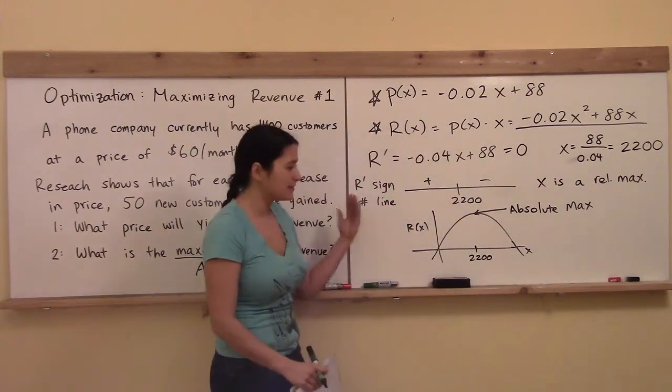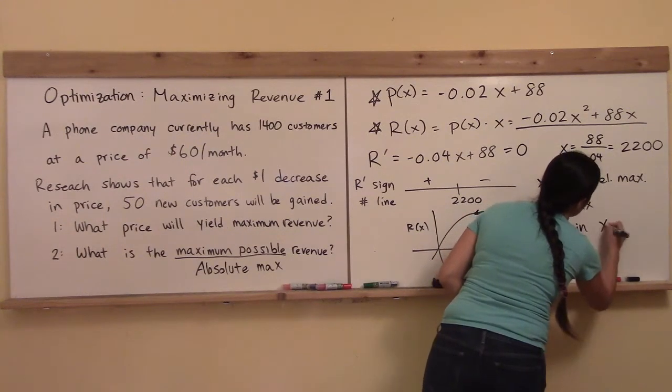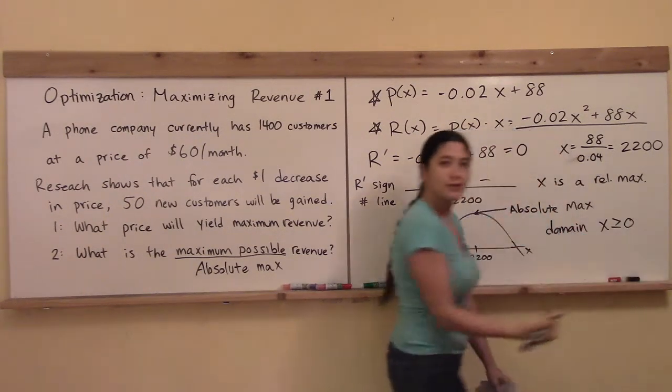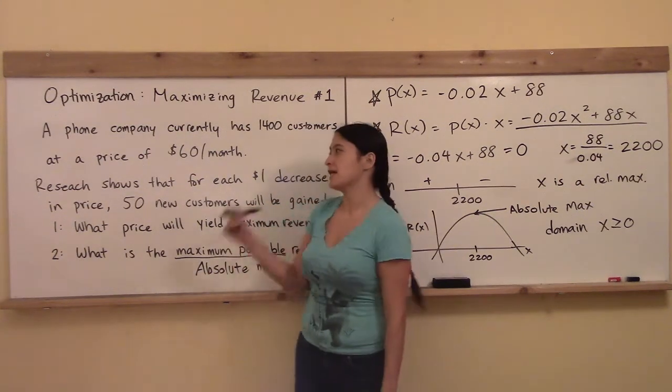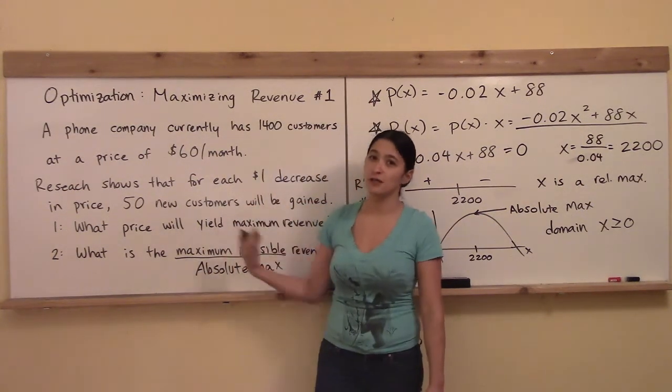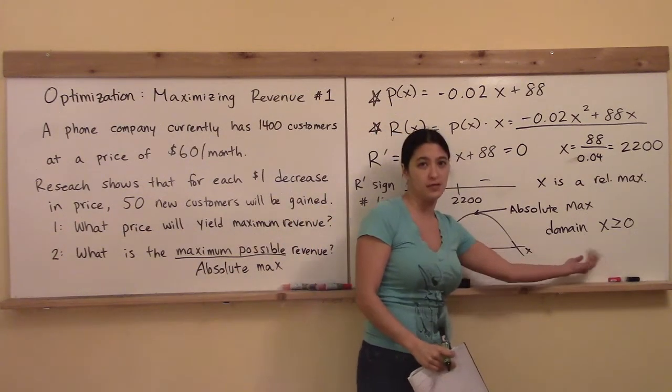So at least I know that for my domain here, in my domain, that x has to be greater or equal to zero, because you can't have a negative number of customers. But it doesn't say that my company can only handle so many customers, so there's no high end to the domain here.